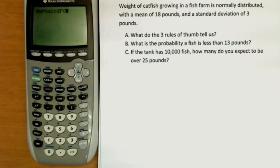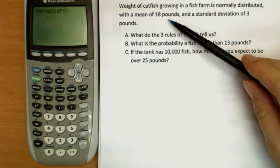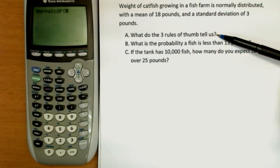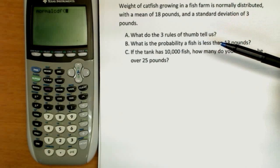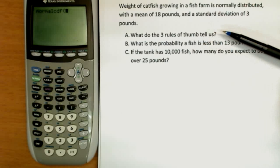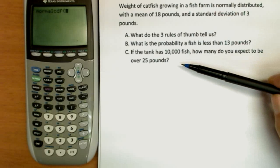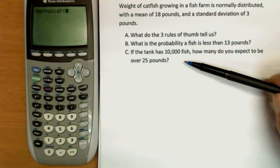So here's a problem to work on. Weight of catfish growing in a fish farm is normally distributed, with a mean of 18 pounds, and a standard deviation of 3 pounds. What do the three rules of thumb tell us about our catfish? What is the probability that a fish is less than 13 pounds? So we grab one fish and we go fishing in our own fish pond and we catch one. What's the probability that it's less than 13 pounds? And if the tank has 10,000 fish, how many do you expect of those 10,000 to be over 25 pounds?